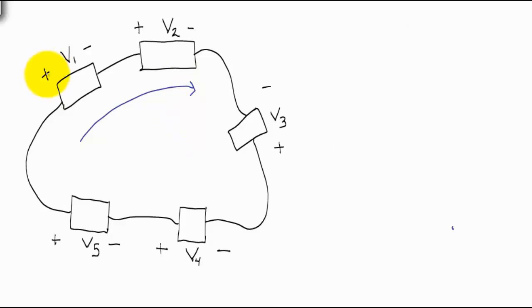One is to go around the loop and mark the voltage in each equation with the sign we first encounter. So if I start here, I encounter the positive sign on V1, so I would call that positive. Continuing on, V2 would be positive, V3 negative, V4 negative, and V5 negative.